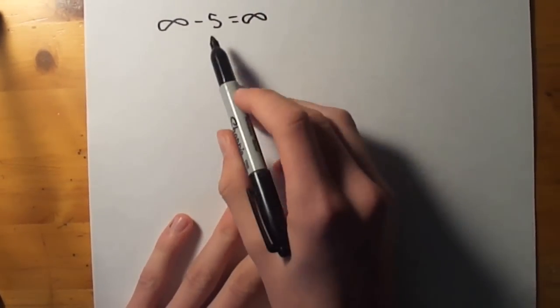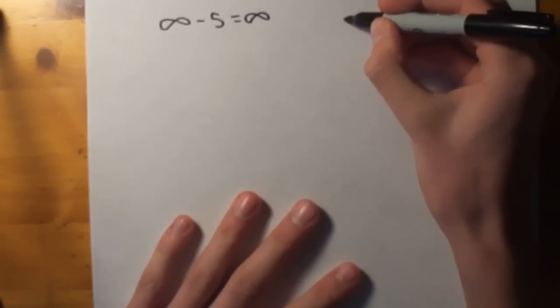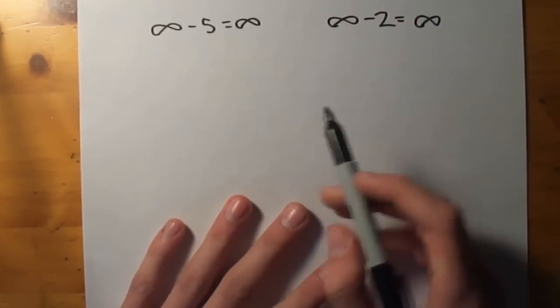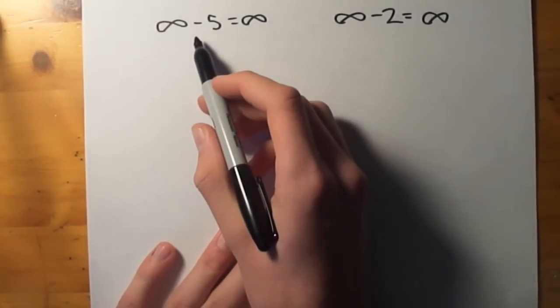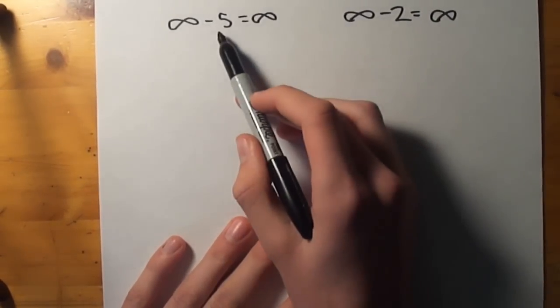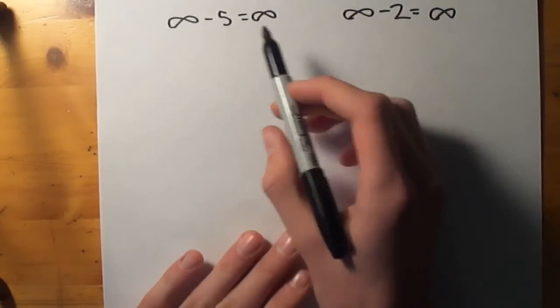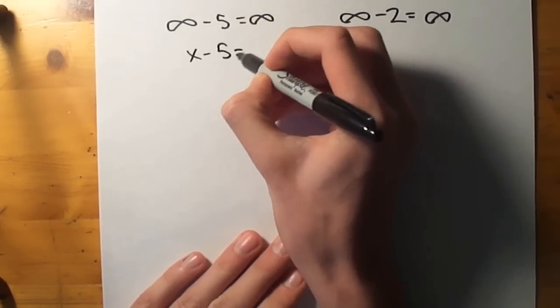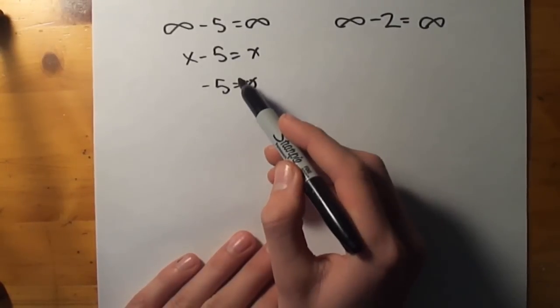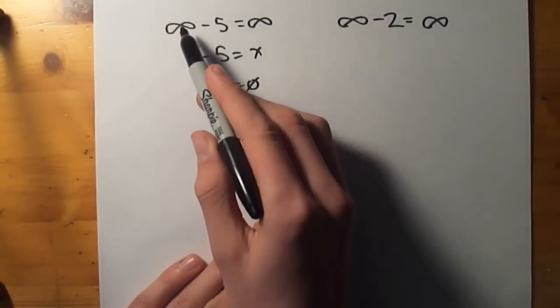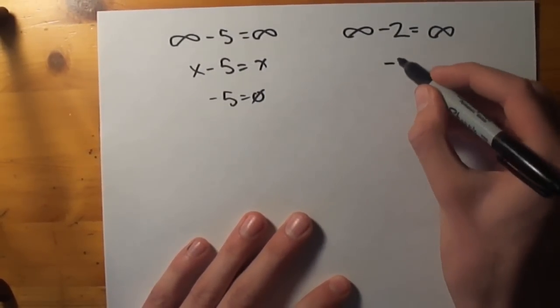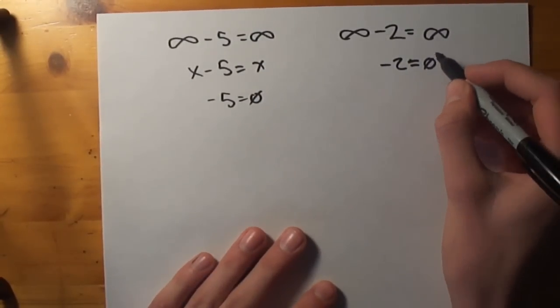We'll leave that where it is right now. Then we'll take another number, say 2. Infinity minus 2 is equal to infinity. You can do addition as well, but we'll get there in a second. This doesn't work mathematically. Infinity minus 5 is not equal to infinity mathematically. If this was a variable, if we take x minus 5 is equal to x, that doesn't work because you get negative 5 is equal to 0. And this is impossible. But technically, infinity is still equal, or infinity minus 5 is still equal to infinity. And the same thing happens with this. You get negative 2 is equal to 0, which you can't have.